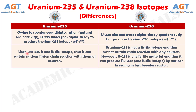Number 7. Uranium-235 is a fissile isotope and thus can sustain a nuclear fission chain reaction with thermal neutrons, whereas Uranium-238 is not a fissile isotope and thus cannot sustain a chain reaction with any neutron. However, Uranium-238 is a fertile material and thus it can produce Plutonium-239, a fissile isotope, by nuclear breeding in a fast breeder reactor.